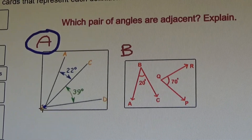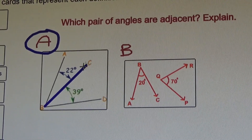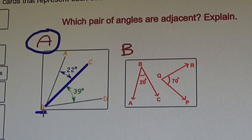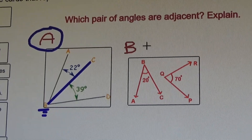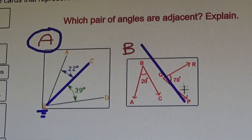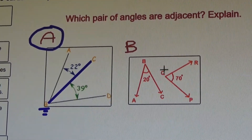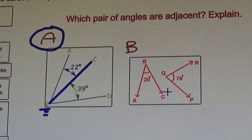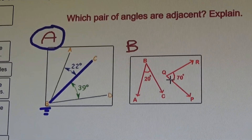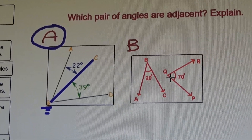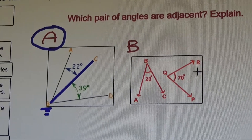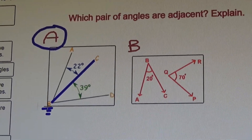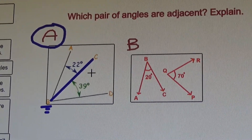That's right. These angles share a side and they also share a vertex. The other angles are not adjacent — they're not next to each other, they're not connected in any way. They do not share a vertex and they do not share a side. So these are not adjacent. Choice A — these are adjacent angles.